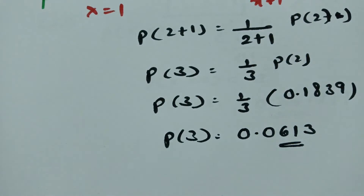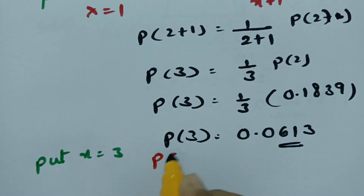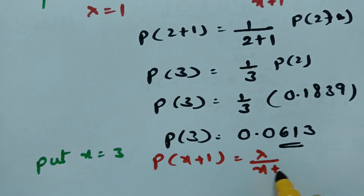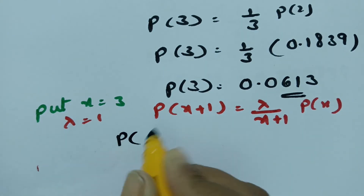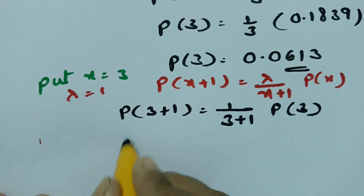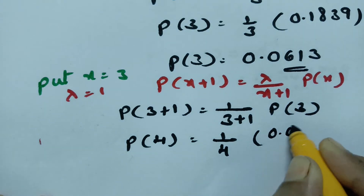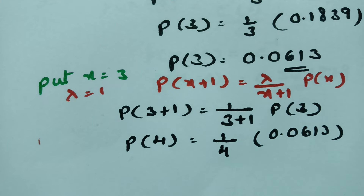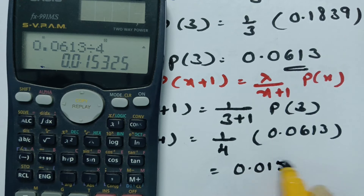Next, putting x equals 3 in the recurrence formula: probability of X plus 1 equals lambda divided by (X plus 1) times P(X). With lambda equals 1 and x equals 3, probability of 4 equals 1 over 4 times probability of 3, which is 0.0613. So probability of 4 equals 0.0613 divided by 4, which equals 0.015325.